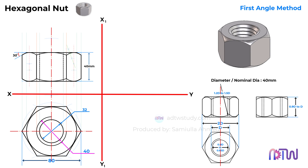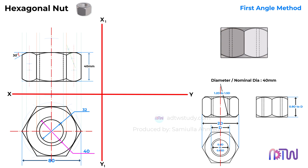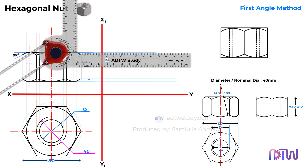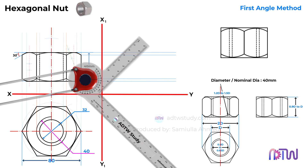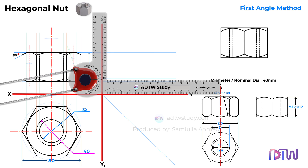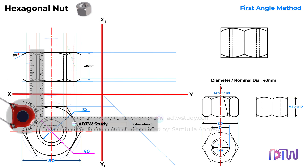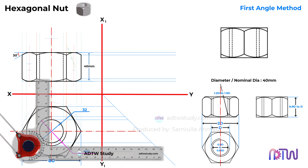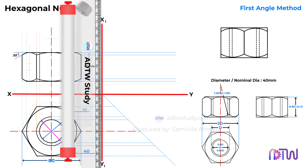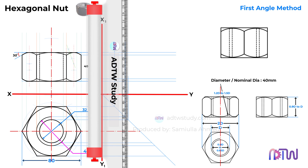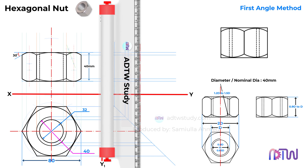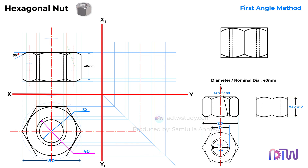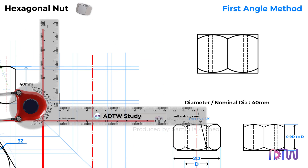Next, we will move on to the side view of the nut. To draw it, we will first project the projection lines from the front and top view. Draw horizontal projection lines from the front view. Next, draw an inclined line at 45 degrees from the origin. Project the projection lines from the top view. These lines will help us in drawing the side view of the nut. Draw the rectangle representing the outline of the nut.